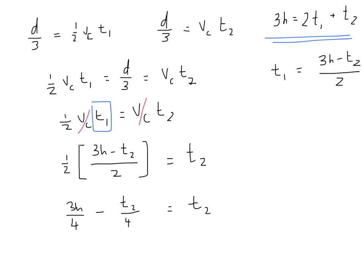So, when I add T_2 over 4 to both sides, I get 3 hours over 4 equals, well, I'm going to have a positive 4 over 4 T_2, and then another positive 1 fourth T_2, which gives me 5 fourths.